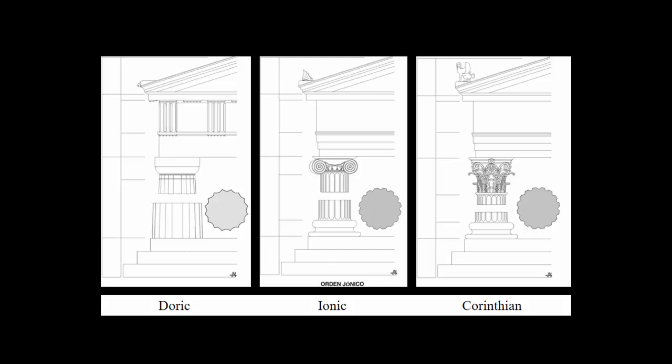The Ionic order has columns that are simpler, thinner, and more delicate, with a base and a capital that has a scroll form, because Ionia saw itself as an intellectual city. They had a library of tens of thousands of scrolls, and as such, they wanted an architectural style that would reflect their character and identity as being intellectuals.